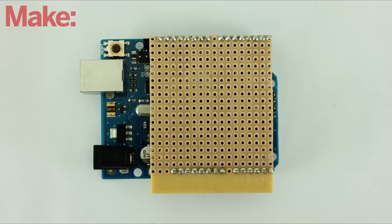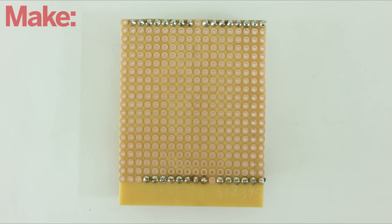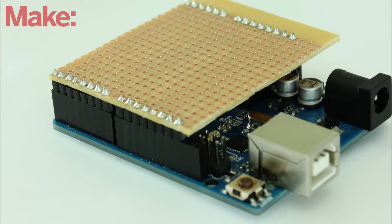The most basic kind of shield that you can make is a protoshield. This is essentially a plain circuit board with a set of attached header pins. You just need to make one small modification to the header pins so that you can mount the shield onto an Arduino.